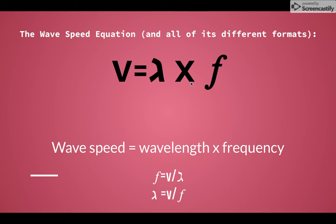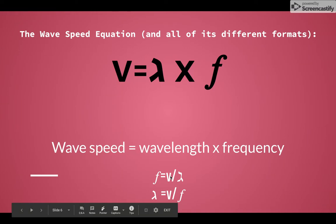Now, sometimes we want to solve for frequency. Well, that's easy too. We take the velocity or speed and divide it by the wavelength. Likewise, we can solve for wavelength by taking velocity and dividing it by the frequency.